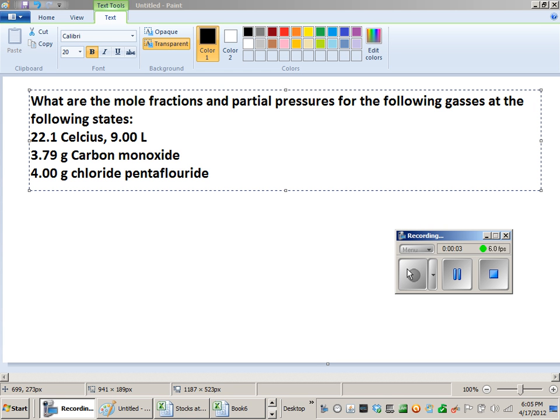This is a comprehensive problem that goes over a lot of material we cover in class. It covers how to turn a molecular name into a formula, how to calculate the molecular mass of a compound, how to figure out moles from that mass, how to figure out pressures from those moles, and the concept of partial pressures being additive to create the total pressure.